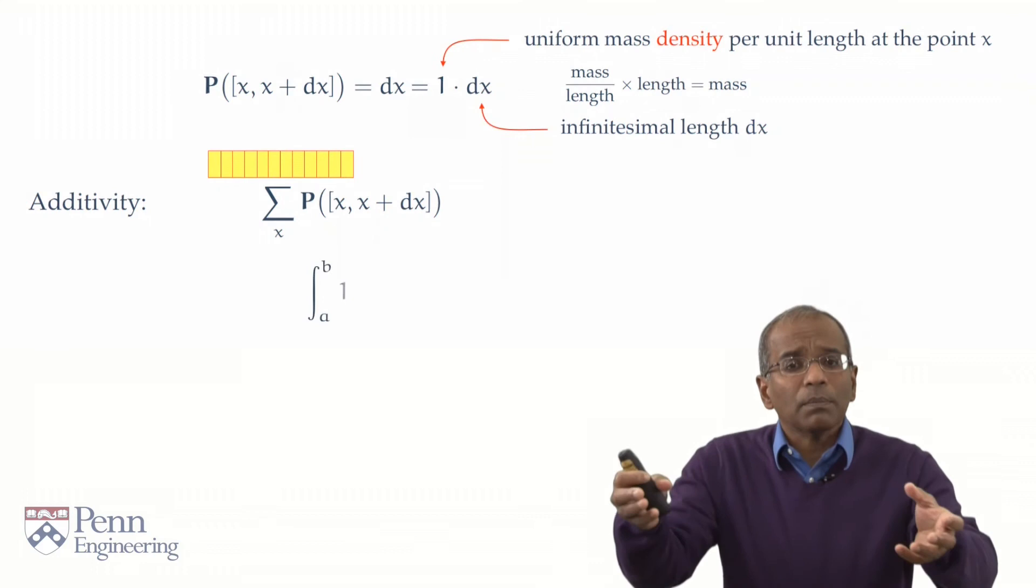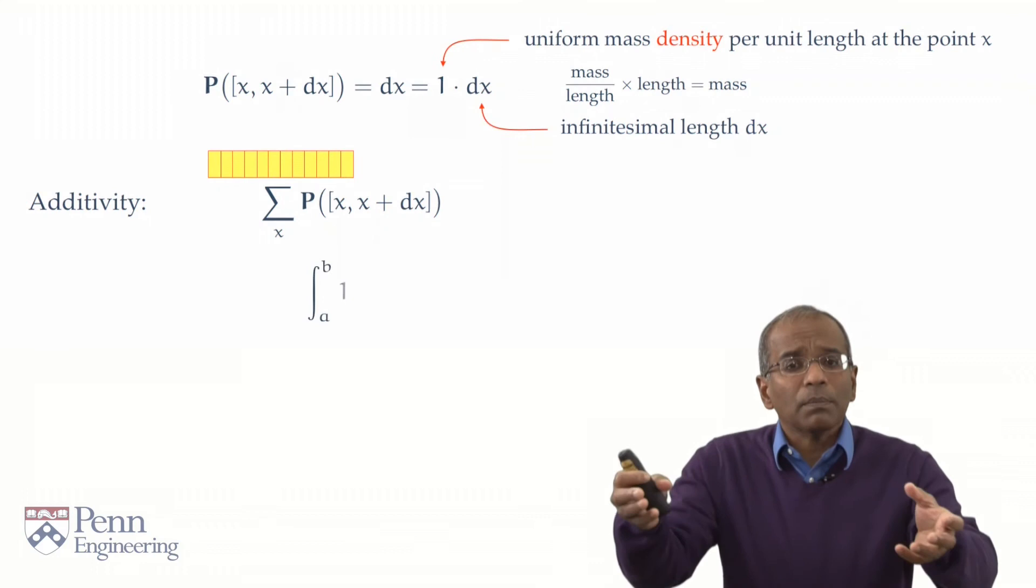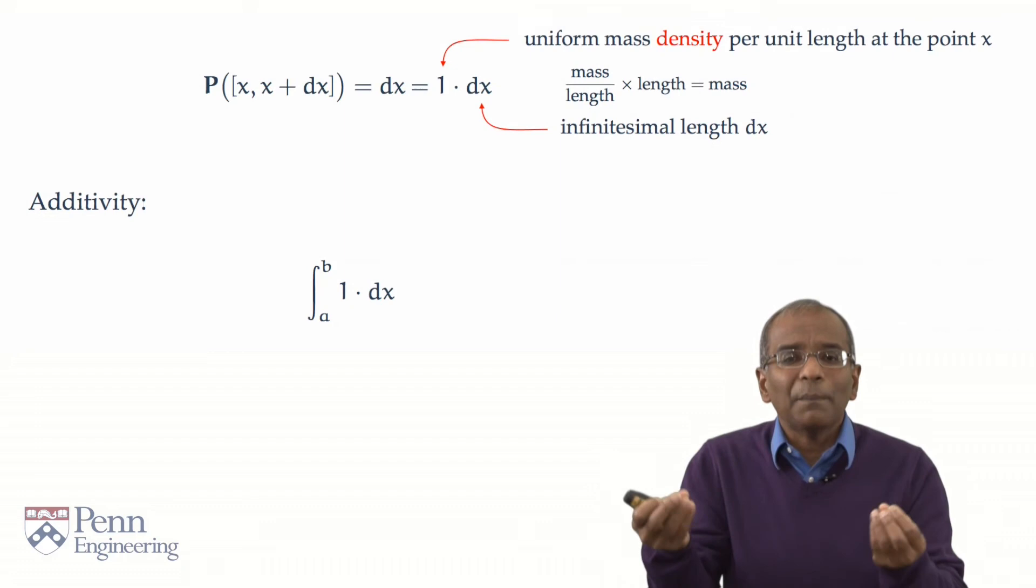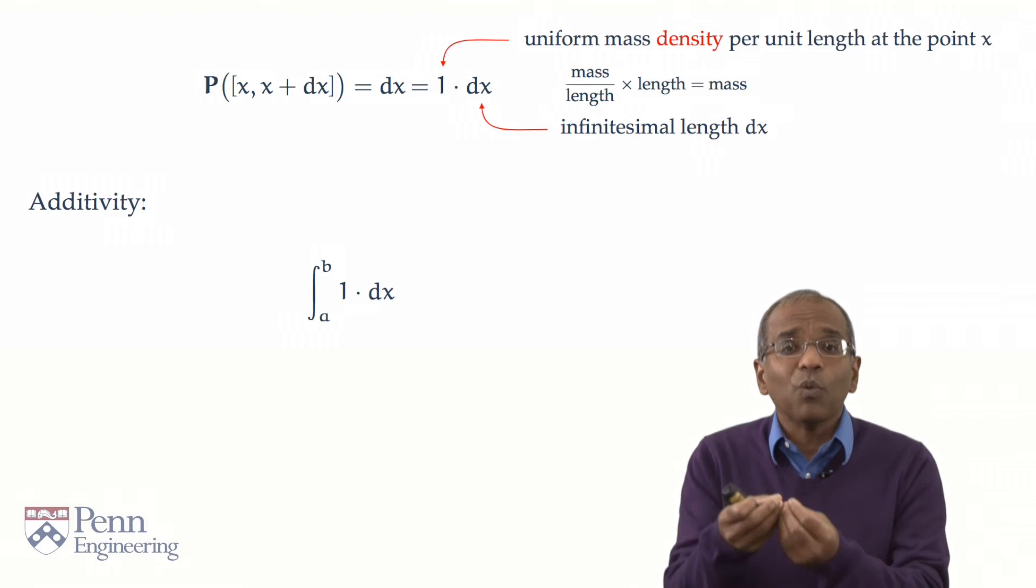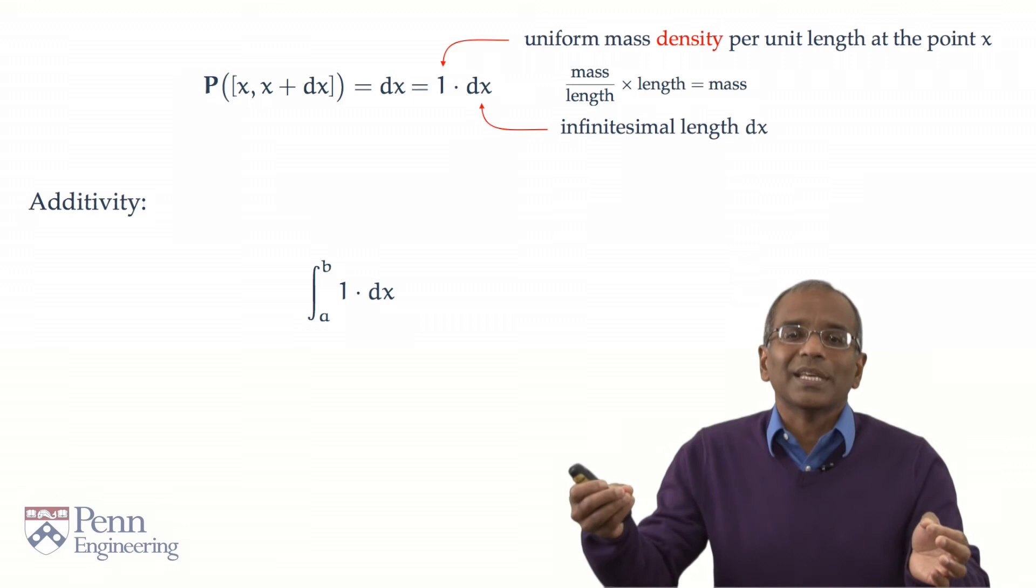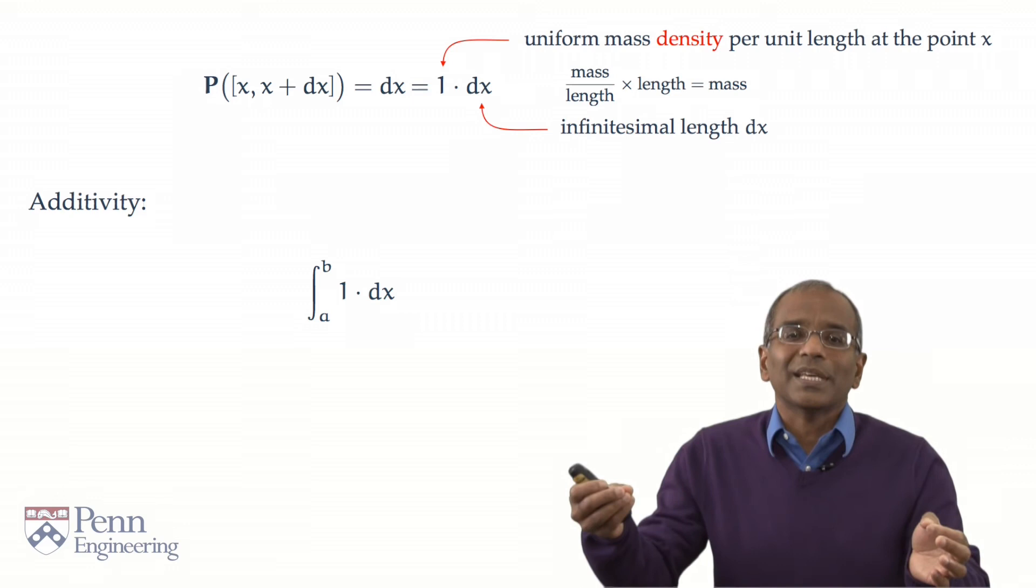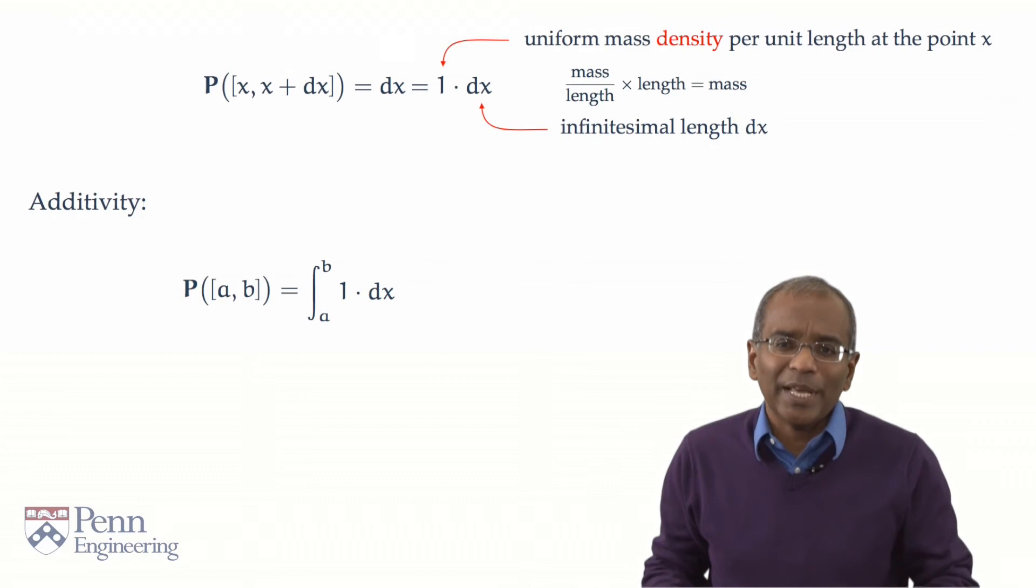And therefore, the sum in the limit as these infinitesimal intervals become tinier and tinier becomes the integral over that interval from a to b of what? Of 1 times dx. This must therefore, in the limit as the interval sizes become tinier and tinier, be exactly the probability of the interval a to b. But of course, this is an elementary integral. And you evaluate it, and of course we get, as we must, b minus a.